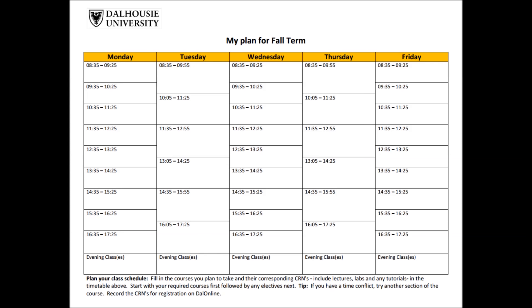Okay, let's get started. We're going to prioritize by writing down the courses that we want the most first. We're using a blank timetable and a pencil in order to ensure that before you register, you have a conflict-free schedule that works for you. We'll use this example list of courses to demonstrate.